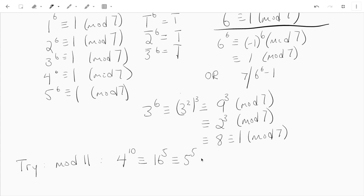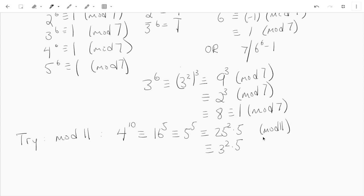Now 5 to the fifth power, what can we do there? Well, we can write it as 25² times 5. This is all mod 11. 16 is congruent to 5, so 16⁵ is congruent to 5⁵. And now I've written 5⁵ as (5²)² times 5. And 25, if you take off multiple of 11, you get 3. So this is really 3² times 5. Again, this is mod 11.